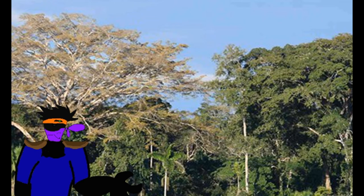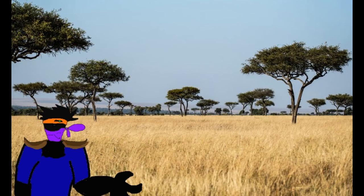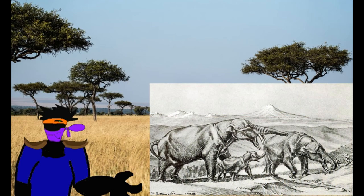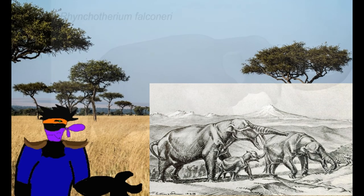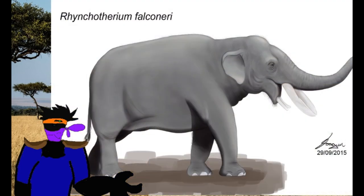Gompotheres died out in the Old World due to another cooling and drying period, which replaced the already dry forest with savanna and grassland. It was also competition from modern elephants and their very close relatives. Rhinotherium emerged in North America and spread to Central America. It is believed to have evolved from Gompatherium and lived from the Miocene to the Pliocene, from 13.6 to 3.6 million years ago — living for 10 million years. It is believed Rhinotherium evolved into the last radiation of Gompotheres in Central and South America.